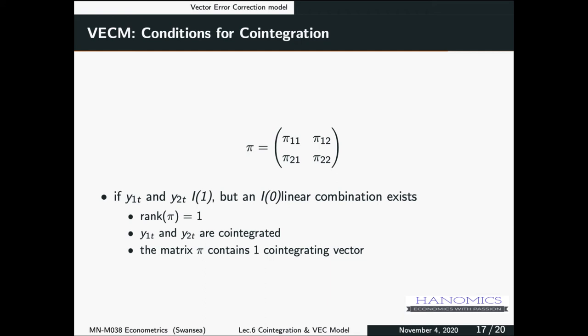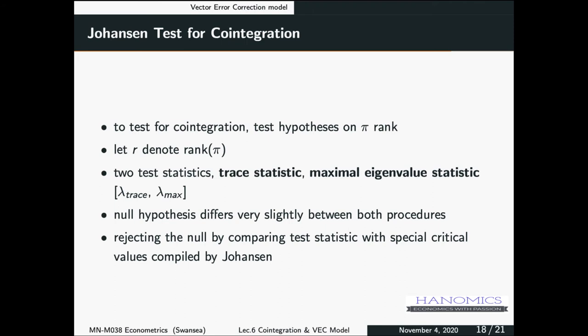In most cases we talk about I(1) variables. If the rank of pi is 0, both variables are I(1) but not cointegrated — most likely you will have a spurious regression situation. Johansen developed two test statistics to decide on the rank of this matrix: the trace statistic and the maximal eigenvalue statistic, called lambda-trace and lambda-maximum. You test whether the rank of the pi matrix is 0 or not.